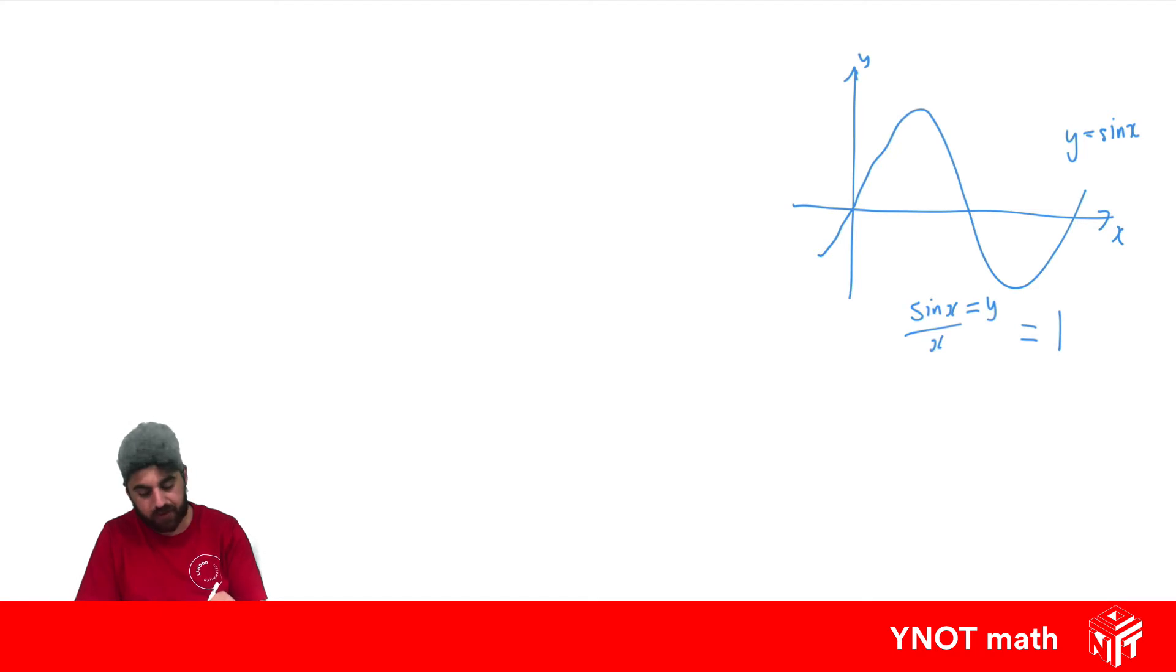Obviously when we get to the point zero, x will equal zero and we can't divide by zero. So a nice way to write this is that the limit as x approaches zero of sine x divided by x actually equals one. So this is our result.